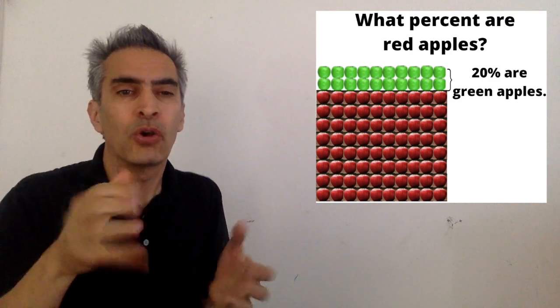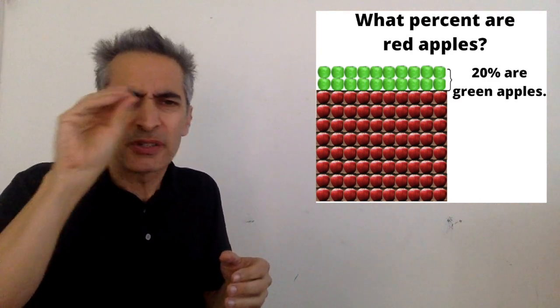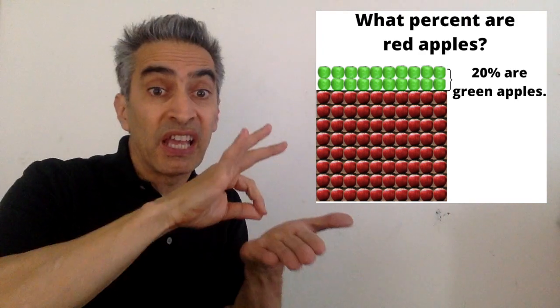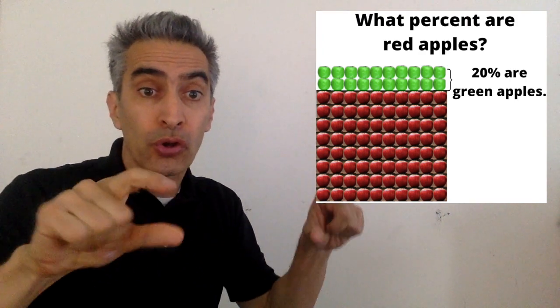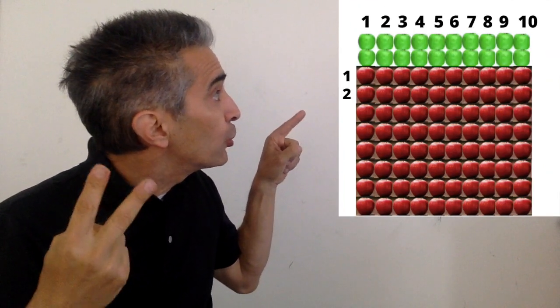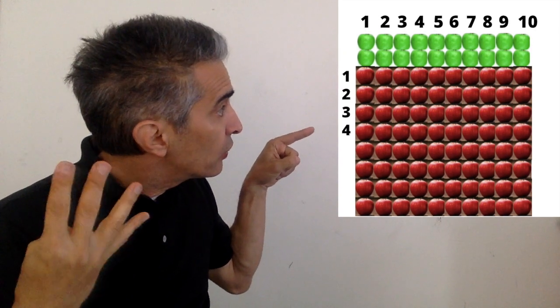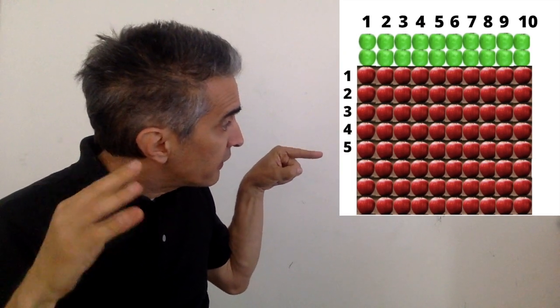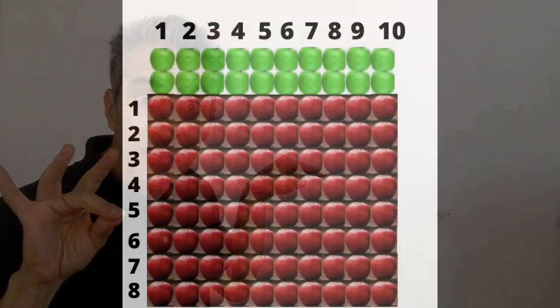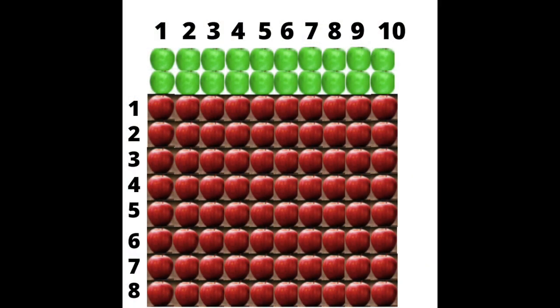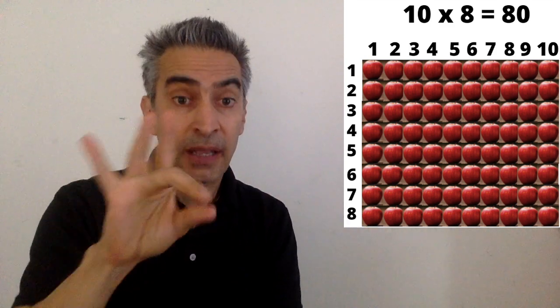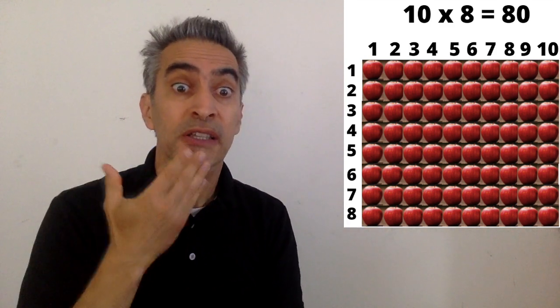Now, Maria wants to know what percent of the apples are red. She counts all of the rows that have red apples: one, two, three, four, five, six, seven, eight. Ten times eight equals eighty red apples.